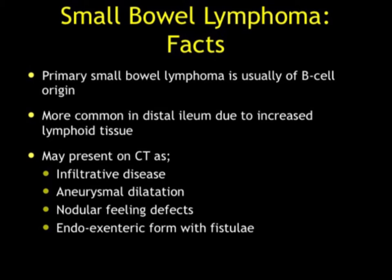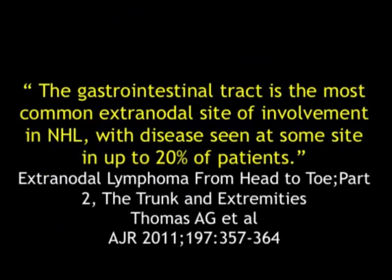In terms of presentation, like other tumors, it's variable. It can be infiltrative. You can see aneurysmal dilatation, nodular filling defects, and an endo-exenteric form with fistula. The most common form is probably an infiltrative process, which can be very focal or more diffuse. The GI tract is the most common extranodal site of involvement in non-Hodgkin's lymphoma, with disease seen at some site in up to 20% of cases.